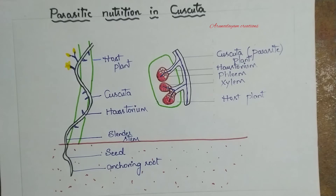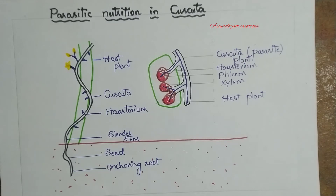Cuscuta contains a very small amount of chlorophyll which is not sufficient for its survival. That lesser amount of chlorophyll is not adequate, so it depends on other plants for food.